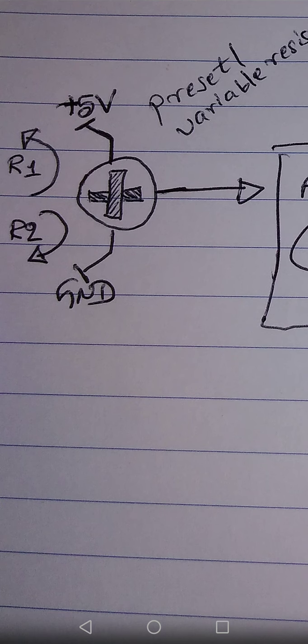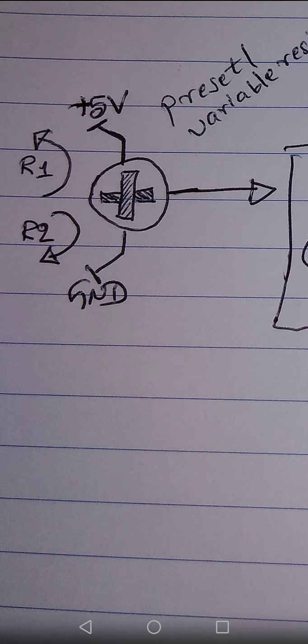Once you make the connections, put your screwdriver in the cross and rotate it. When you rotate, the resistance value at the middle pin changes, and because of that the voltage at the middle pin also changes. The total supply voltage is five volts. We measure the voltage from ground to the middle pin, and that voltage is what goes to A0.